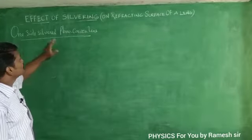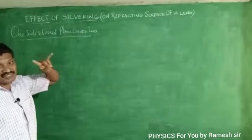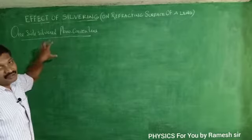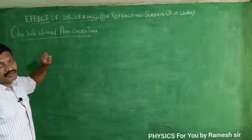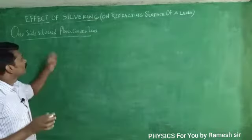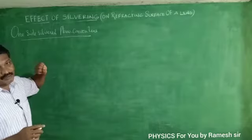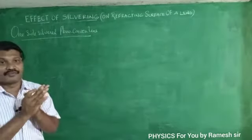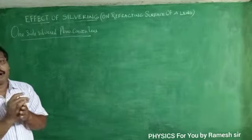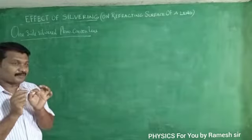My students, already we have seen that for one side of the convex lens is silvered, you can get an effective focal length for biconvex lens. Now we have to see about plano-convex lens — suppose the plane surface or the convex side of the plano-convex lens is silvered.